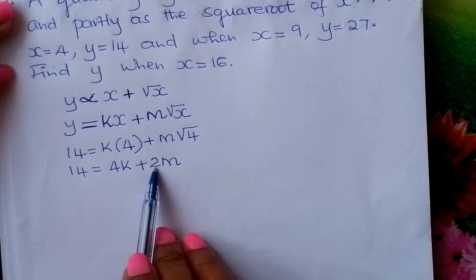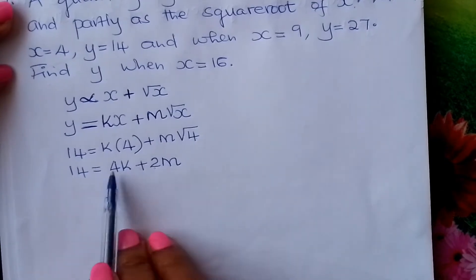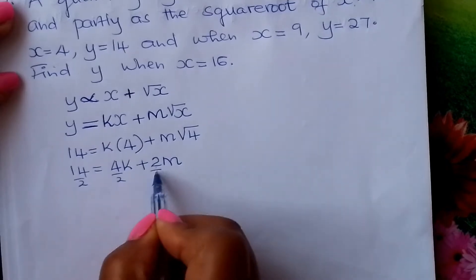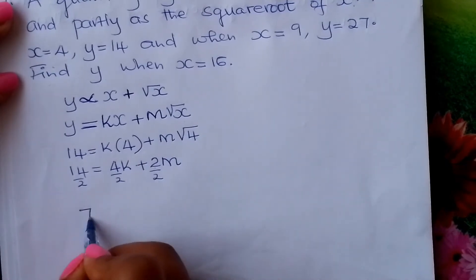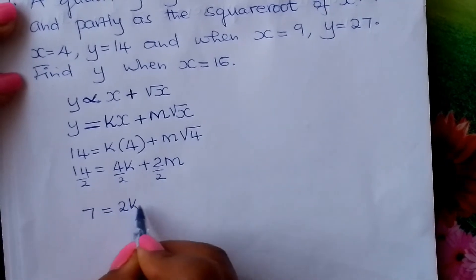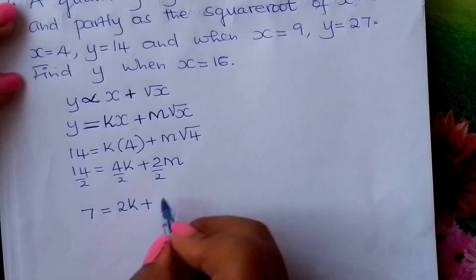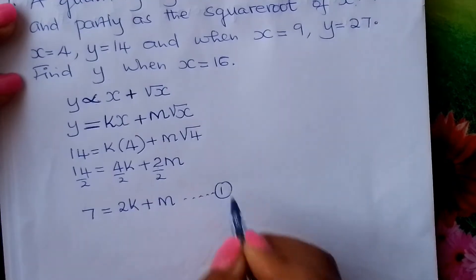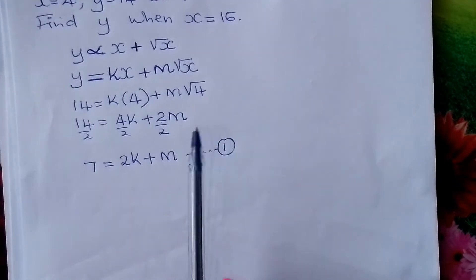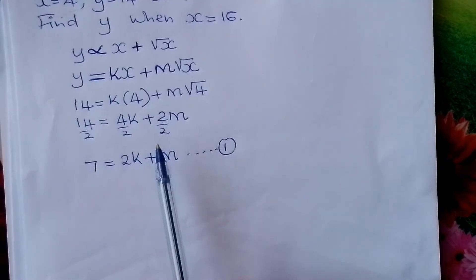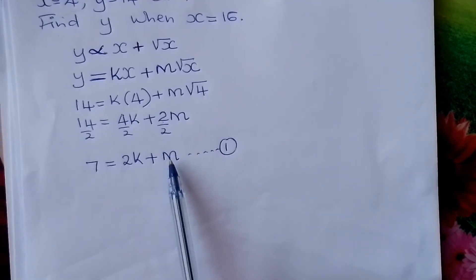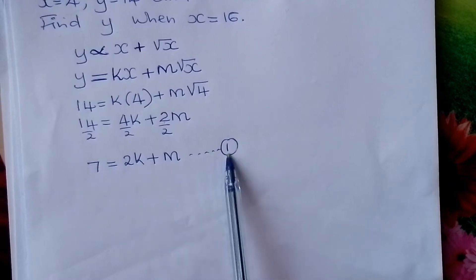You can simplify this equation by dividing everything by 2, which gives us 7 equals 2K plus M. This is your first simultaneous equation. In partial variation, we normally come up with two simultaneous equations, and this is one of them.